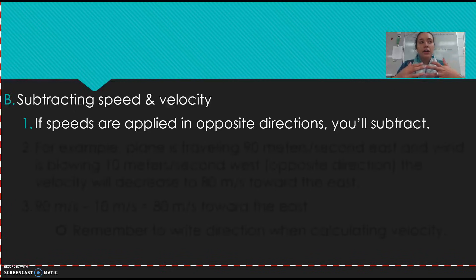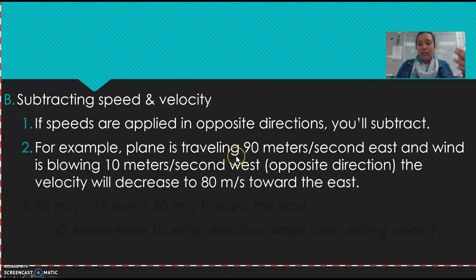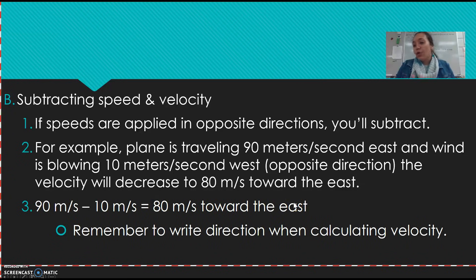If they're going in opposite directions, you subtract. For example: a plane is traveling 90 meters per second East, but the wind is blowing in the opposite direction at 10 meters per second West — so you subtract, 90 minus 10 equals 80 meters per second. You're still going East because that's the largest, but you slow down because of the opposing force. As a rule of thumb: same direction, you add; opposite direction, you subtract. This applies to both force and velocity, and the reason we use velocity and not speed is because we're talking about direction.